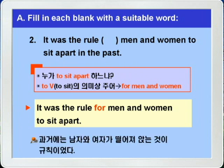정답을 넣어서 다시 해석하면, 'It was the rule for men and women to sit apart in the past.' 옛날 과거에는 따로따로 앉는 것이 규칙이었다. 즉, 남녀 칠세 부동성을 말하고 있는 것입니다.